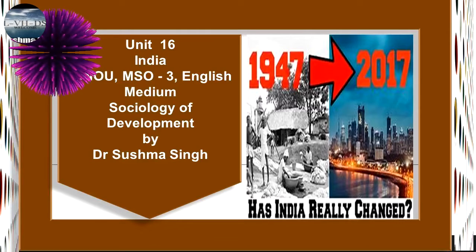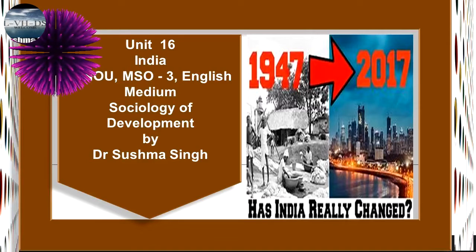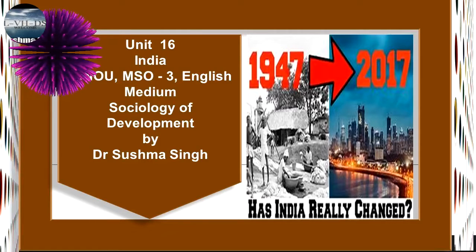Now let us start the next topic: the post-independence phase of development. With the attainment of independence, India chose to follow the path of planned social and economic development, for which the Planning Commission was set up on 15th March 1950 under the chairmanship of Pandit Jawaharlal Nehru, the first Prime Minister of India. Since then, the Prime Minister of India has been the ex-officio chairman of the Planning Commission. Having gone through the background of the Indian economy, we can now analyze the main aims and objectives of the various five-year plans of development.